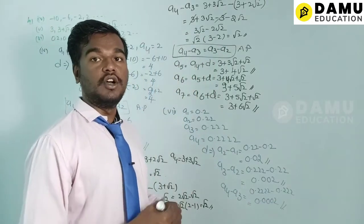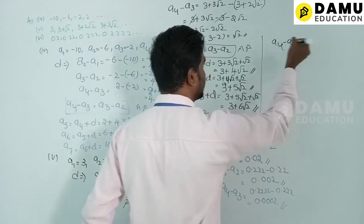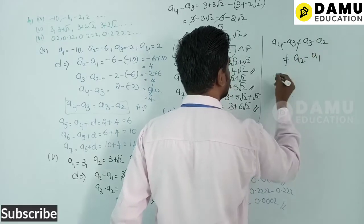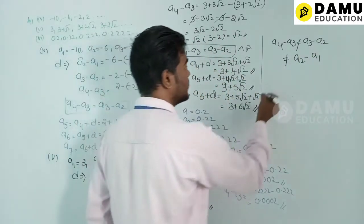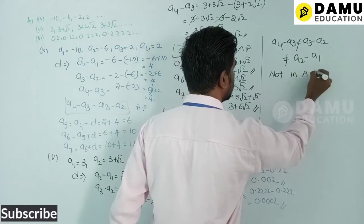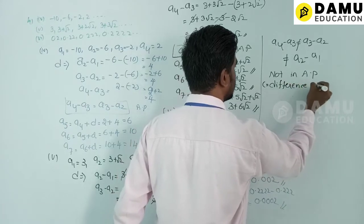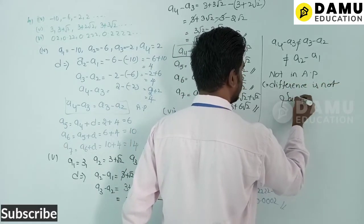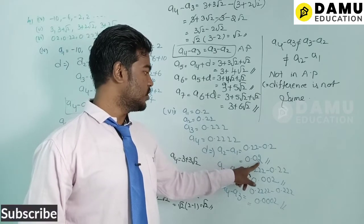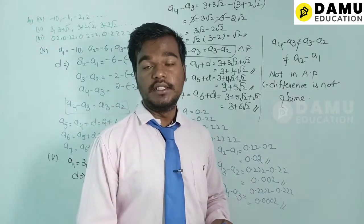Since a4 − a3 ≠ a3 − a2 ≠ a2 − a1 (the differences are 0.02, 0.002, and 0.0002), the common difference is not the same. Therefore the sixth series is not in AP and we cannot write the three more terms.